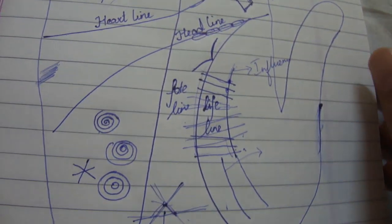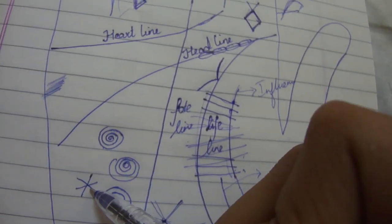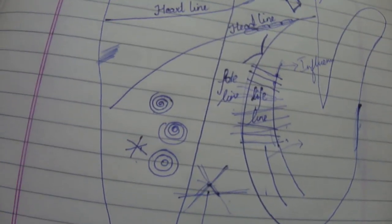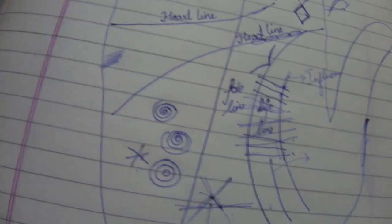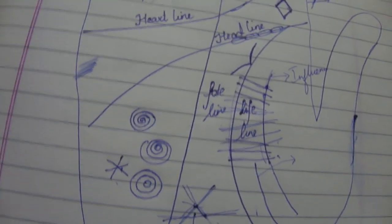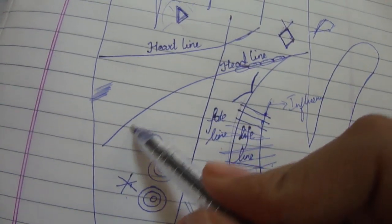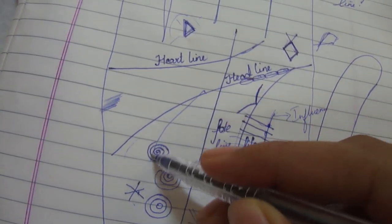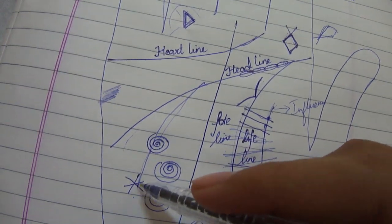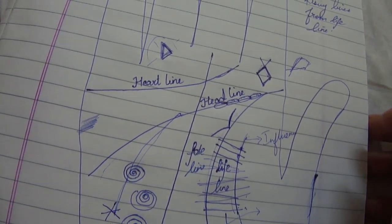Regarding the star marking on the mount of Moon — I have found it in a few people who were very good in creative pursuits. But always see that the headline never connects directly to the star. The headline directly connecting to a star is not a very good marking.